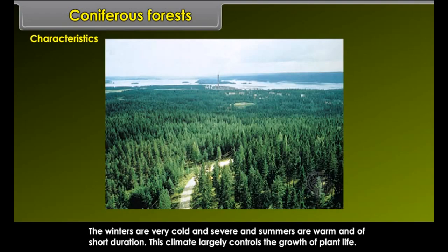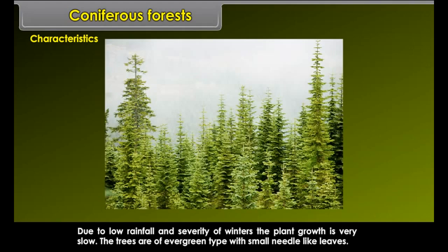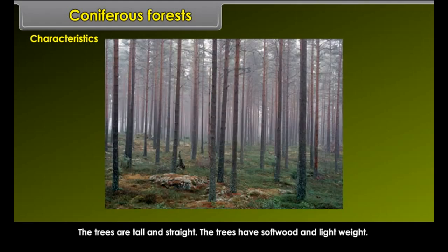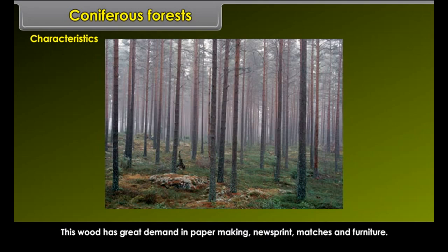Characteristics. The winters are very cold and severe, and summers are warm and of short duration. This climate largely controls the growth of plant life. Due to low rainfall and severity of winters, the plant growth is very slow. The trees are of evergreen type with small needle-like leaves, tall and straight. The trees have soft wood and light weight, with great demand in paper making, newsprint, matches and furniture.